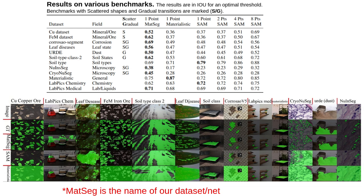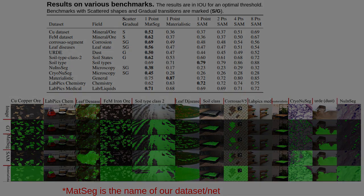This suggests that the data infusion method taps a fundamentally different distribution that was missed by both manual annotations and synthetic data generation approaches. In addition to sharing the dataset, benchmark, and net, we share over 300,000 textures and PBR materials extracted from images to enable future dataset generation.